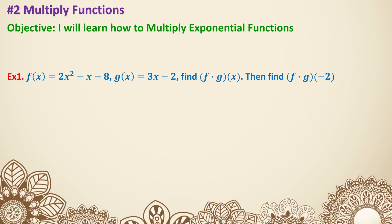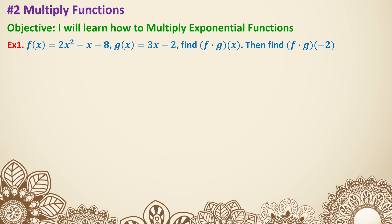In the previous lesson, we learned two different methods: one is the box method, the other is the string method. As for plugging in, we can either plug into the function separately then multiply, or find what the function is going to be after you multiply them, then plug in the final answer. For the two examples, I'm going to do one of each. For the first one, let's use the string method.